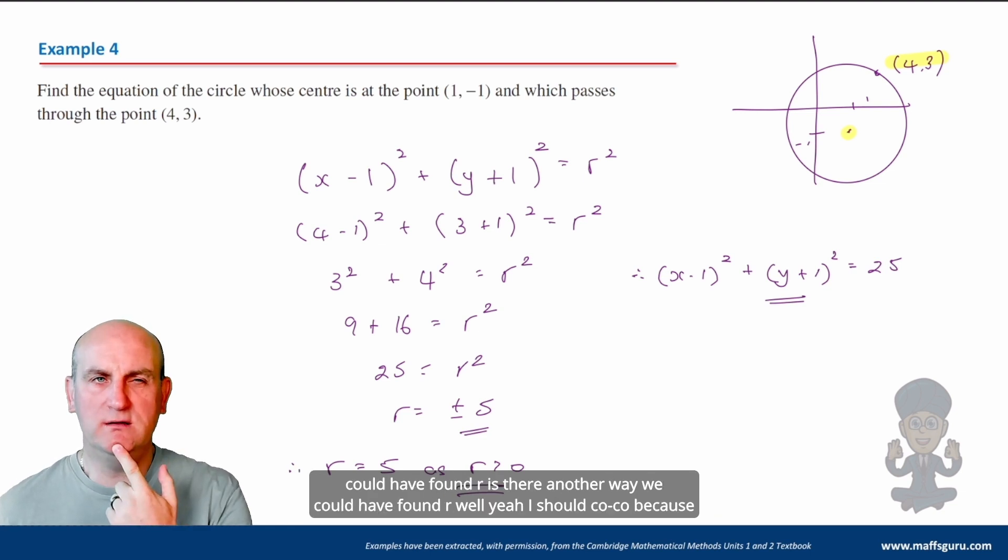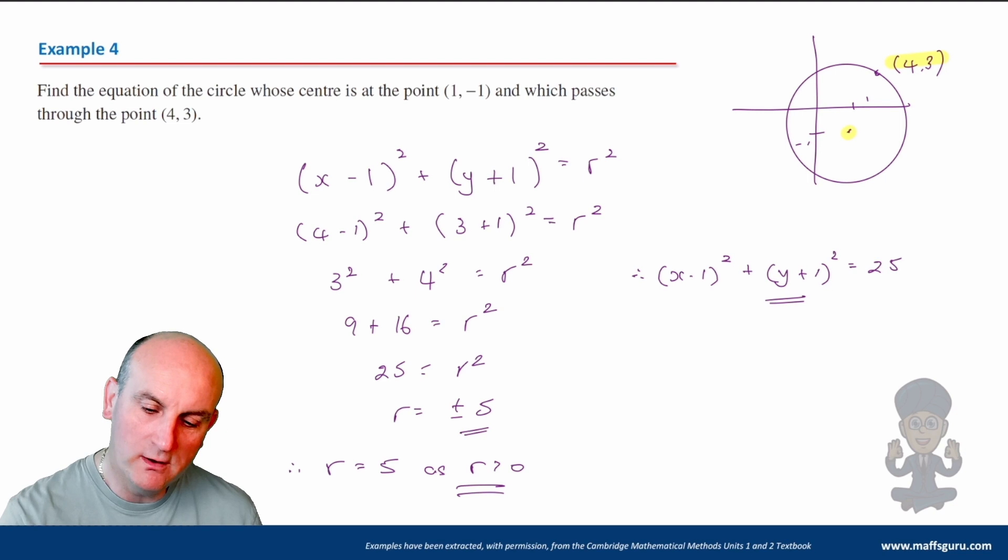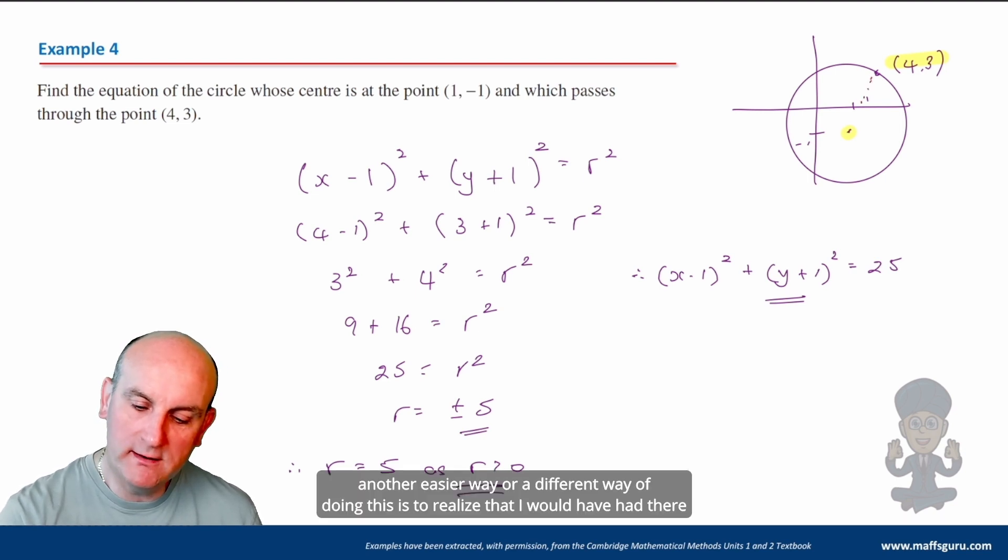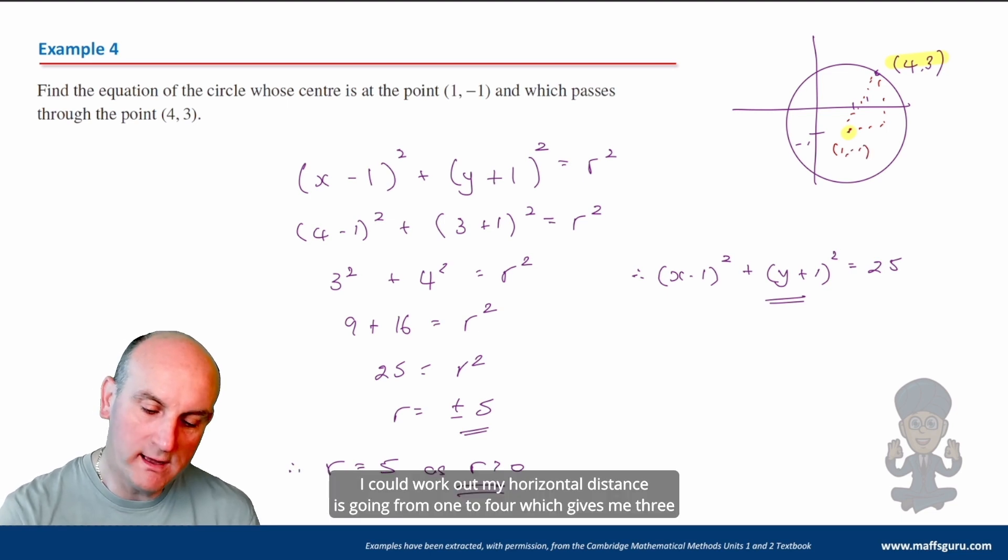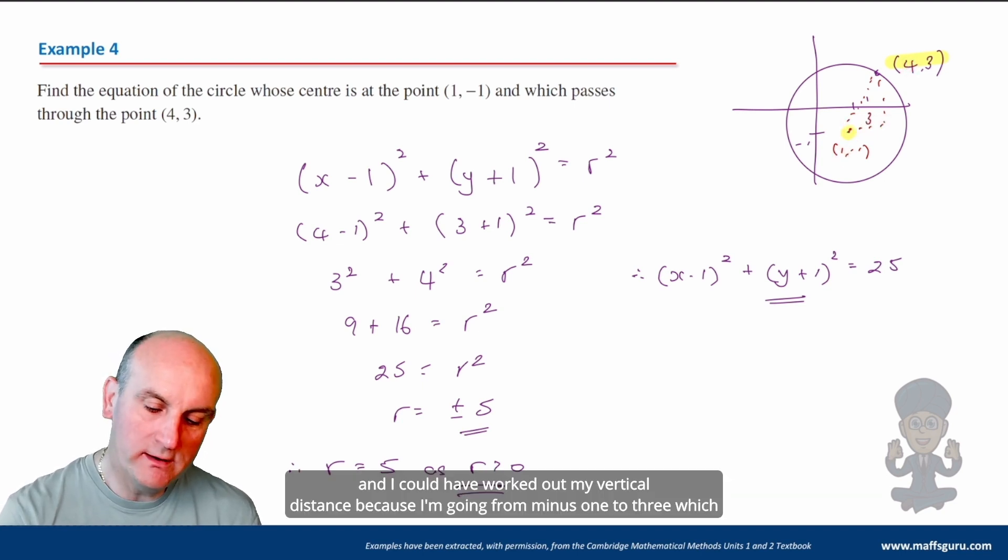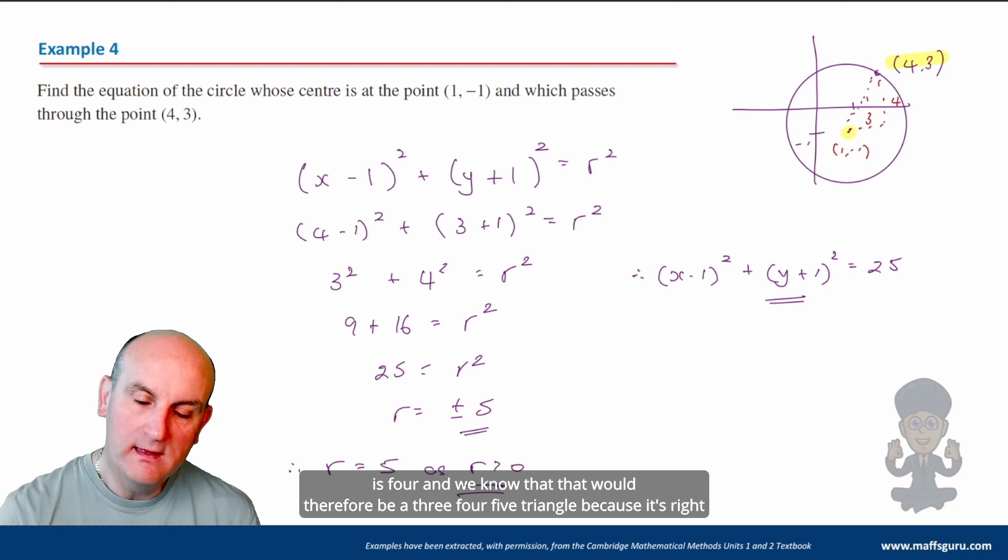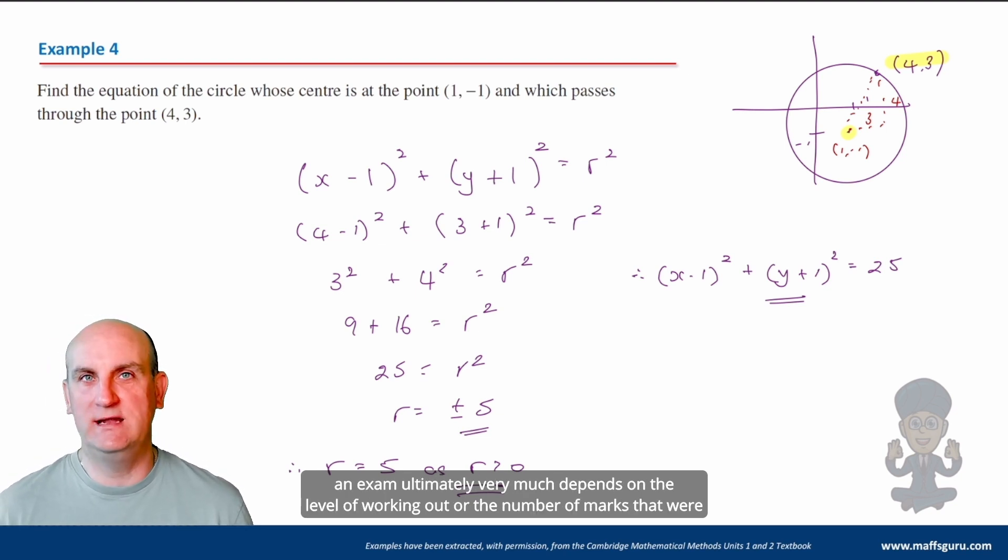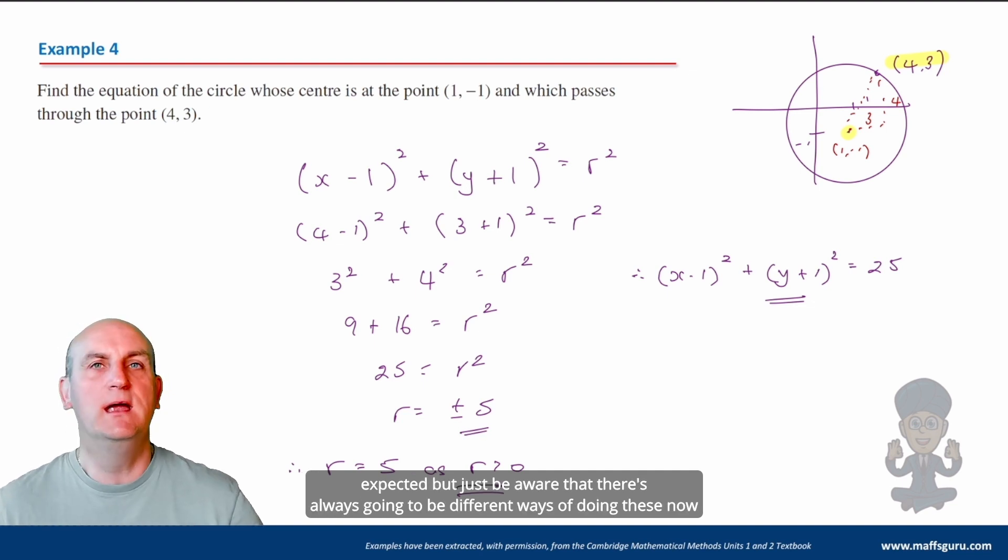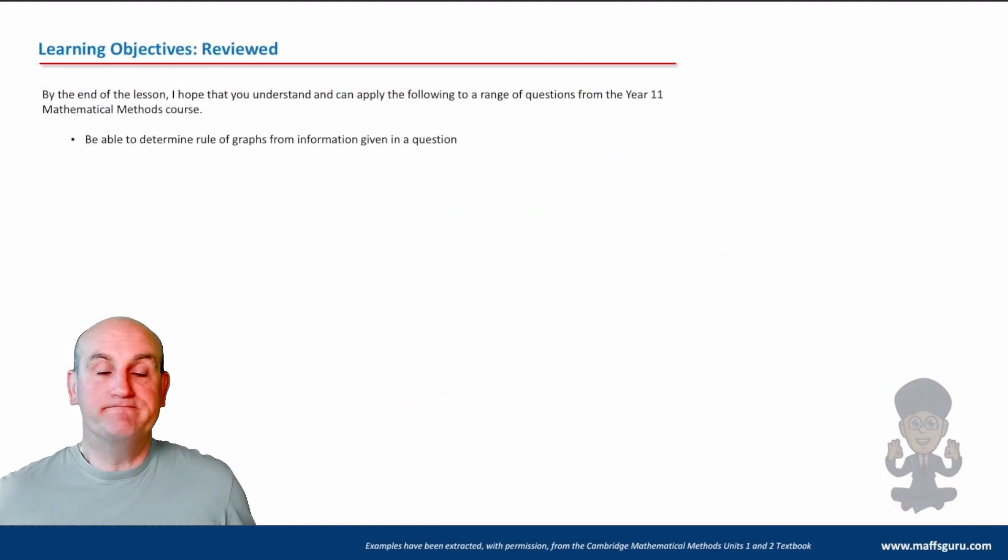So therefore, my answer is that (x-1)² + (y+1)² must equal r², which is 25. Now, is there another way we could have found r? Well, yeah, because another easier way or a different way of doing this is to realize that I would have had there a right angled triangle. Yes. And so because I know that point there is one comma minus one, I could work out my horizontal distance is going from one to four, which gives me three. And I could have worked out my vertical distance because I'm going from minus one to three, which is four. And we know that that would therefore be a three, four, five triangle because it's right angle. And I could have saved myself all that working out. Well, which one would I have used in an exam? Ultimately, very much depends on the level of working out or the number of marks that were expected. But just be aware that there's always going to be different ways of doing these.